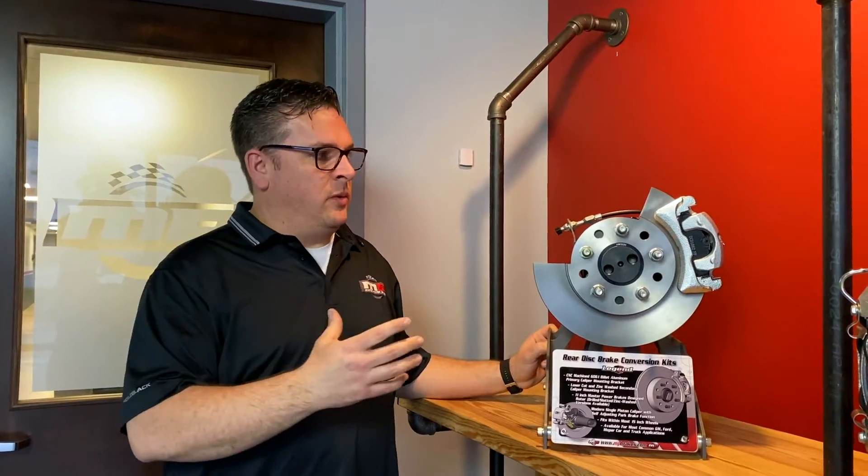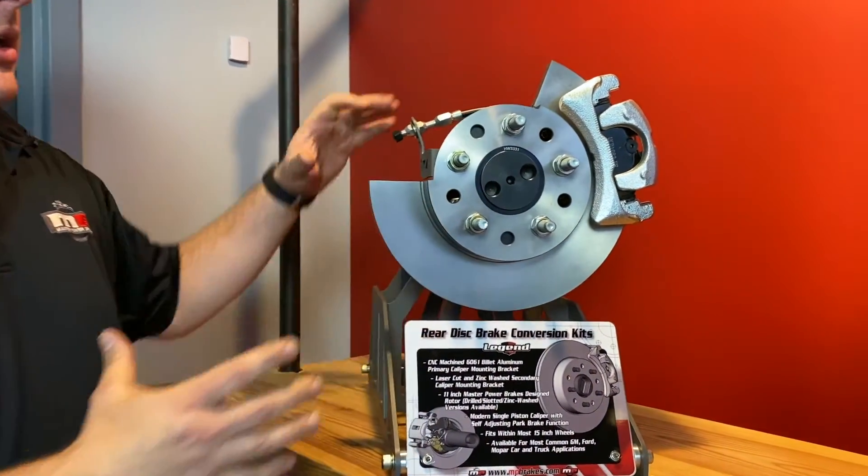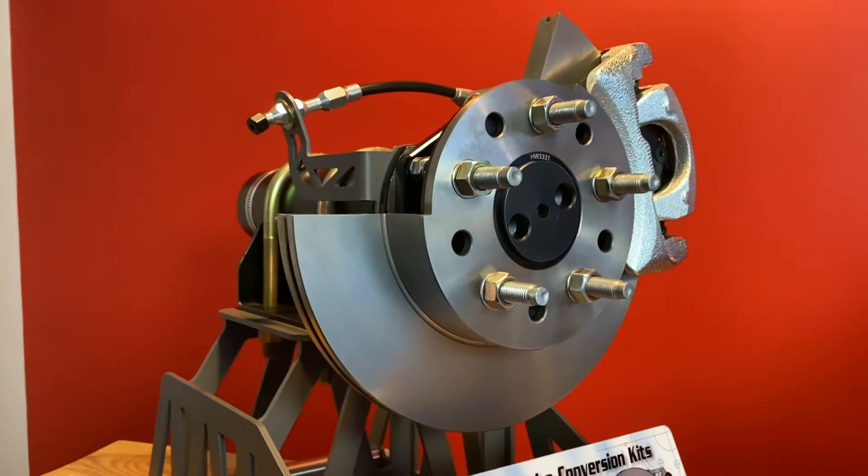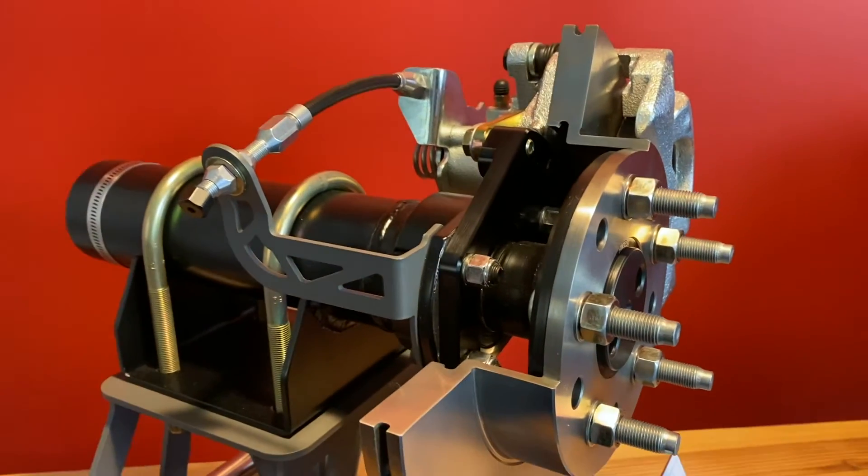So what we've done is we've gone to a modern single piston caliper with a cast iron anchor bracket. We've paired that with an 11-inch rotor, as you can see from the cutaway here. That is all put together with a billet aluminum base bracket and a steel laser cut bracket.